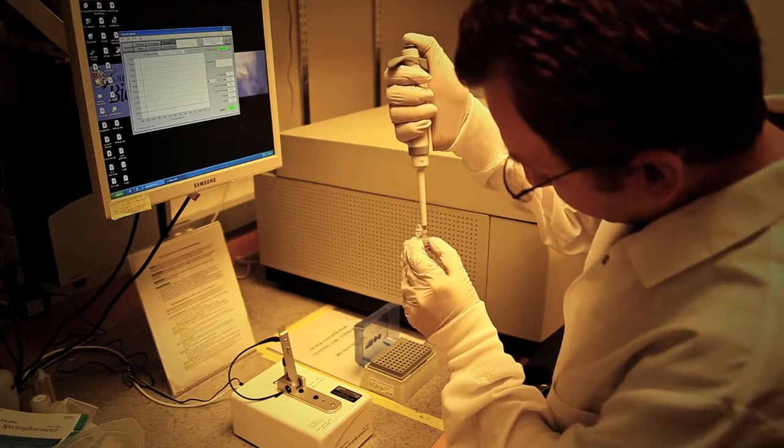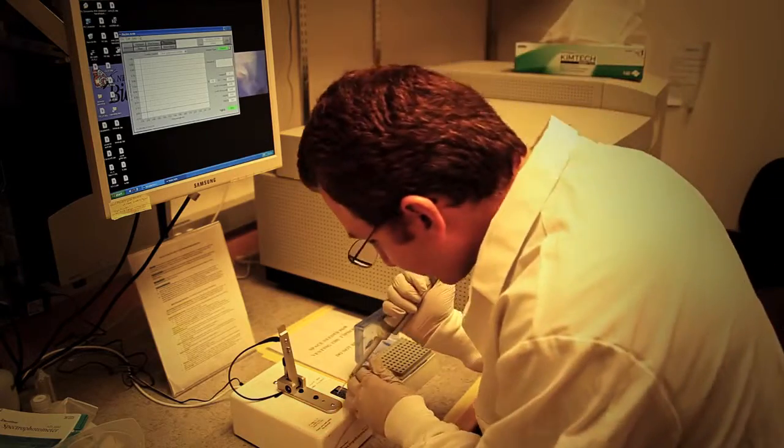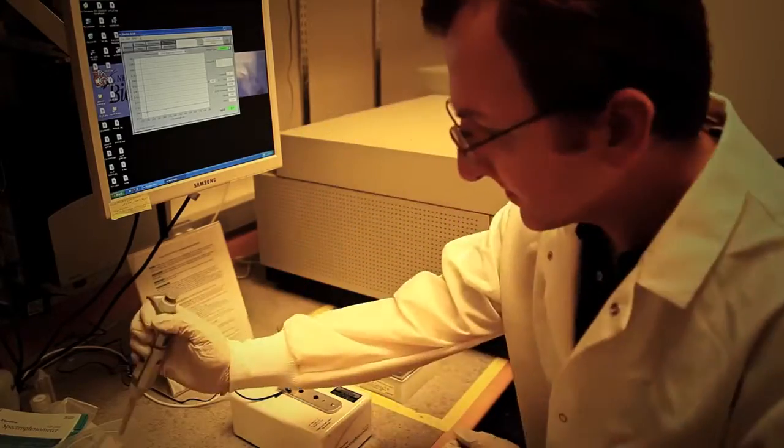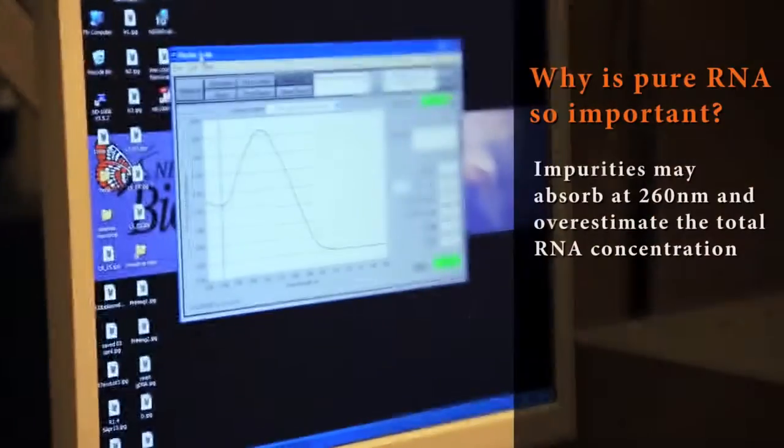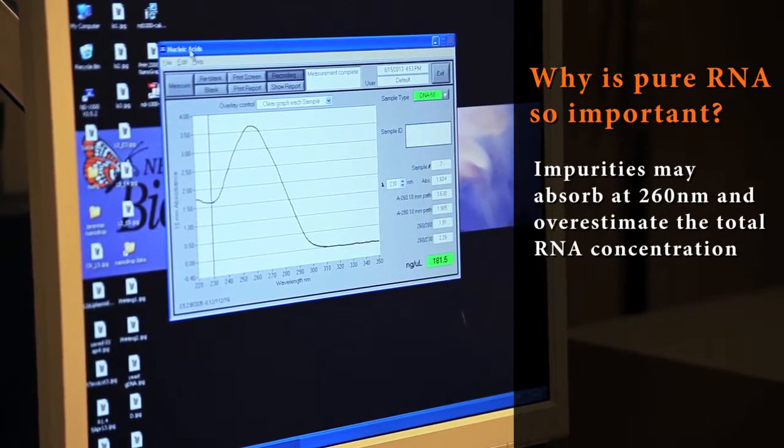Alternatively, you can determine RNA concentration by measuring absorbance at 260 nm using a spectrophotometer such as a NanoDrop. However, free nucleotides and other organic compounds that are routinely used to extract RNA will also absorb at 260 nm. This could result in an overestimation of RNA concentration.